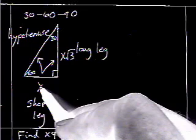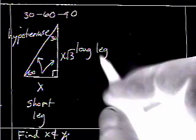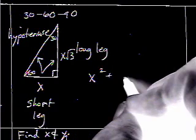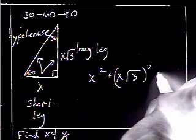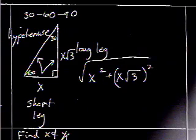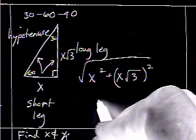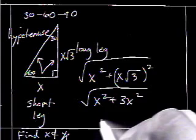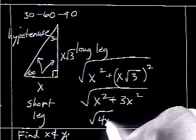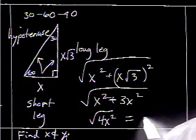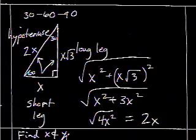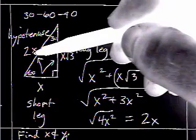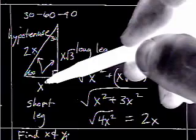If you want the hypotenuse, using the Pythagorean theorem, if we say x squared plus x radical 3 squared, and then take the square root of that, that's x squared plus 3x squared, which is 4x squared, and the square root of that would be 2x. So, you double the short leg. The hypotenuse is just double the short leg. And likewise, if you want to go from the hypotenuse back to the short leg, you just cut it in half.